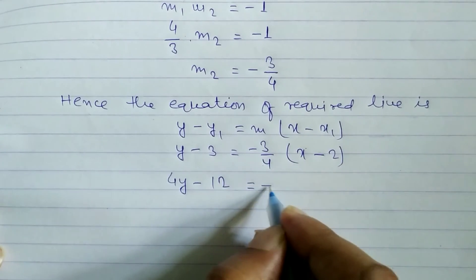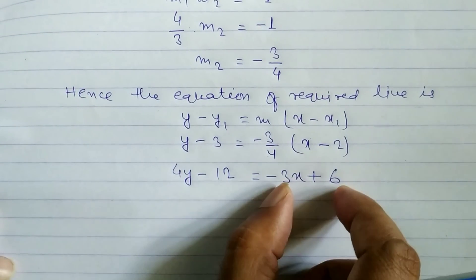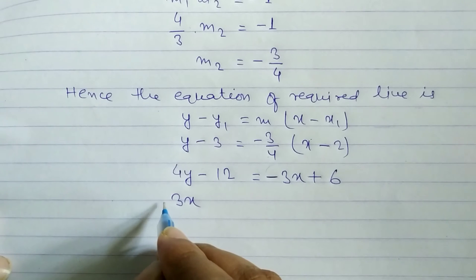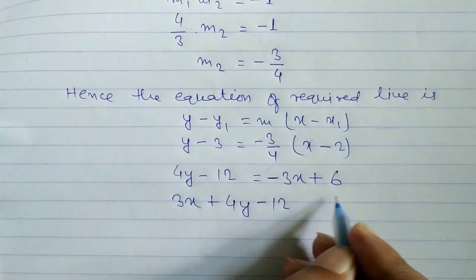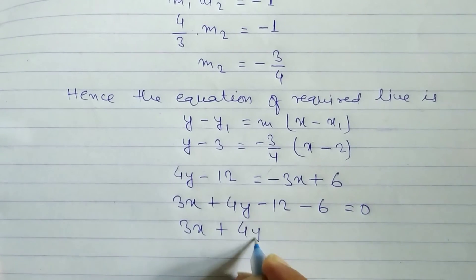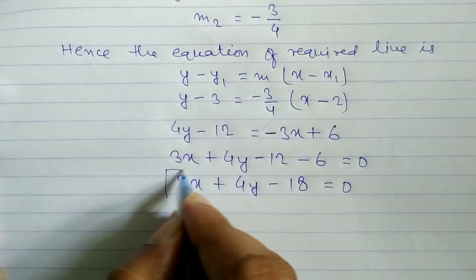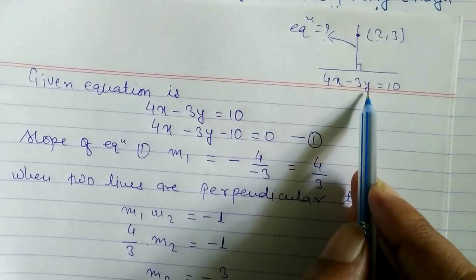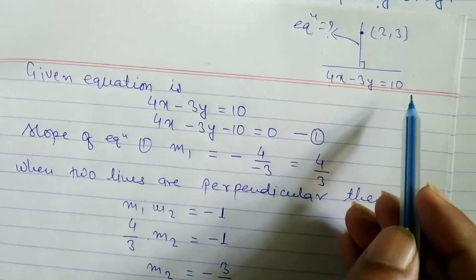Cross multiplying: 4(y minus 3) equals minus 3(x minus 2), giving 4y minus 12 equals minus 3x plus 6. Rearranging all terms to the left side: 3x plus 4y minus 12 minus 6 equals 0, so 3x plus 4y minus 18 equals 0. This is the required equation of the straight line perpendicular to 4x minus 3y equals 10.